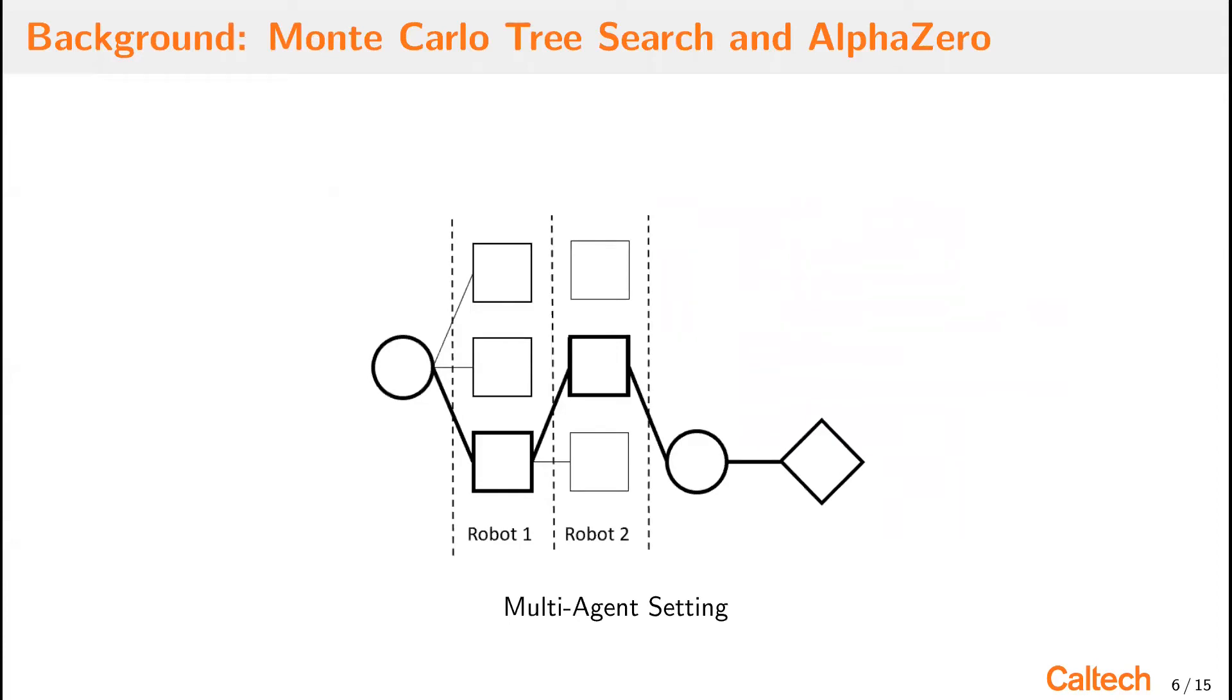The multi-agent extension of Monte Carlo Tree Search has each robot apply its action in a turn-based fashion along the tree, where each robot selects the action that maximizes its own reward.